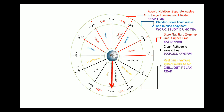Between 11 pm to 1 am is the period of the gallbladder. The gallbladder performs the release of bile, which is helpful for the digestion of fat — meaning fat consumed during the day is digested during this period. Also, in the bone marrow, red blood cells are produced. So during this time, you should sleep and allow the body to generate new blood cells.